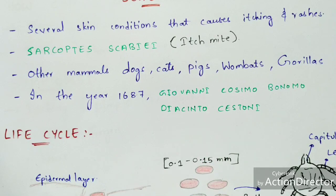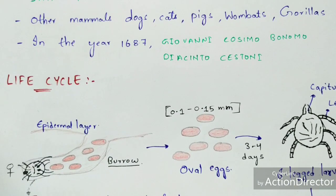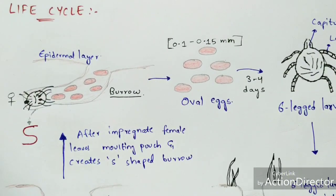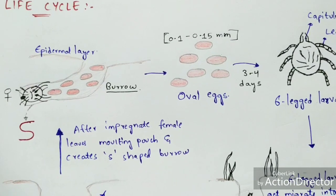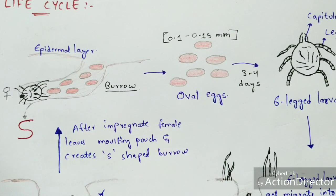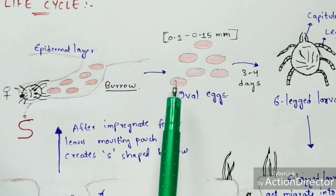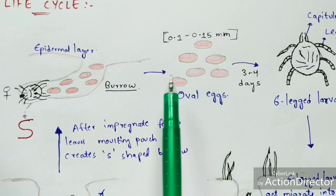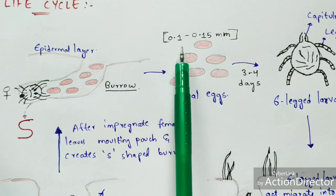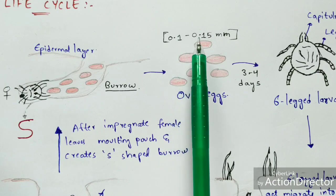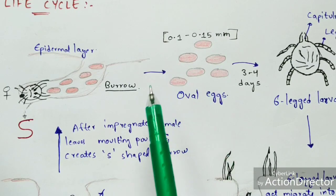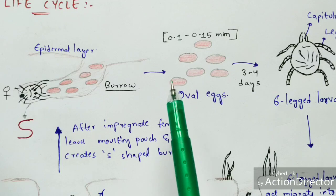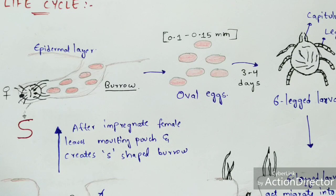Let us discuss the life cycle of the itch mite as discovered by both scientists. The life cycle begins with oval eggs laid by the female itch mite. Both male and female itch mites play a key role in this life cycle. The size of the oval eggs ranges from 0.1 to 0.15 millimeters, and these eggs are present at the epidermal region.